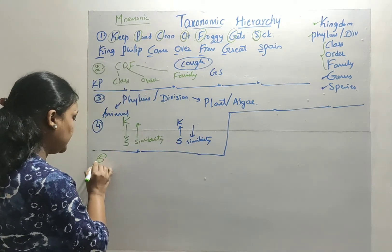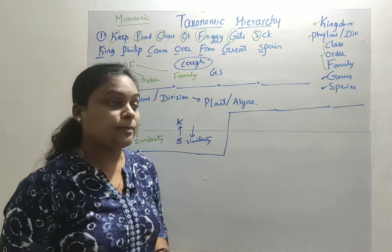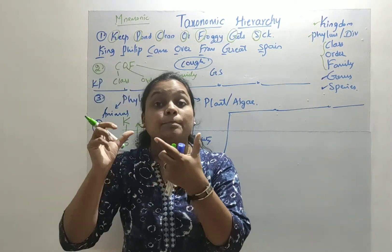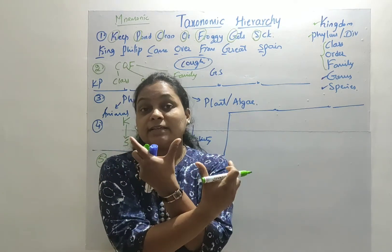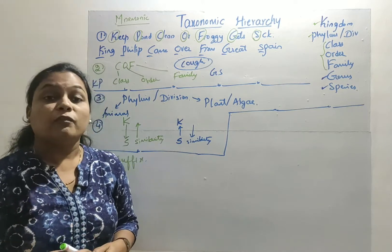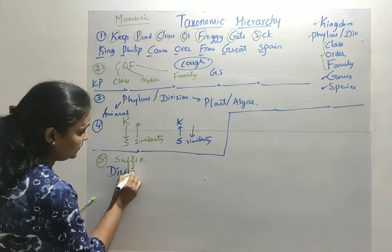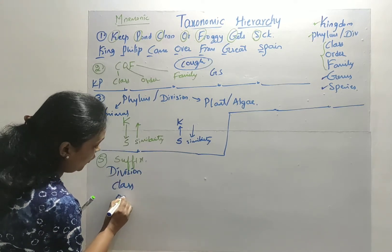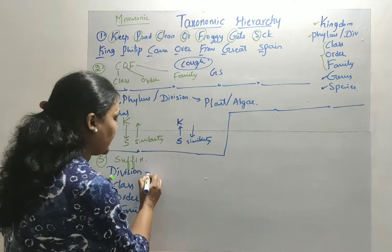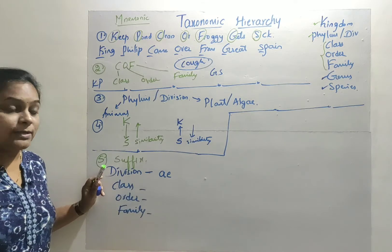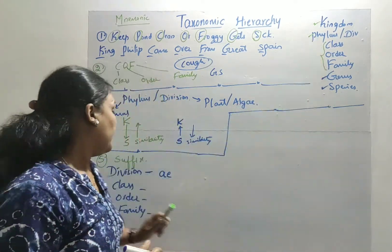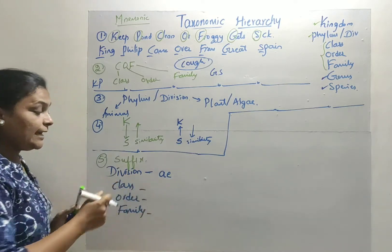The fifth trick is about the suffix used in taxonomic category names. Any word ending with '-ae' refers to the name of a Division (the classification level at the phylum level for plants). For example, 'Angiospermae' — since it ends in '-ae' — is the name of a Division.